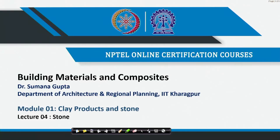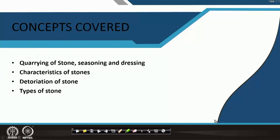Welcome back to lecture 4 of module 1. We had in the last lecture tried to finish some of the clay products and now we will move to stone. The concepts that will be covered are particularly the quarrying of stone, seasoning and dressing, characteristics of stone, deterioration of stone, and types of stone.